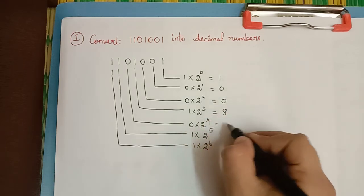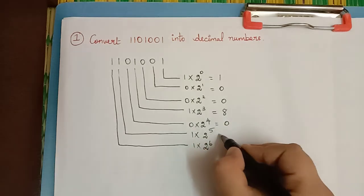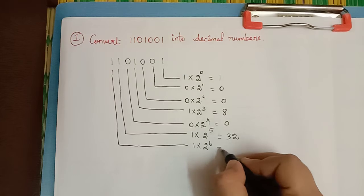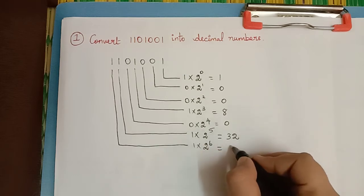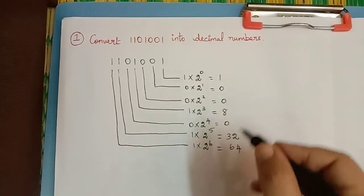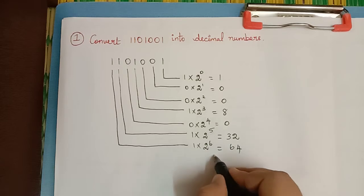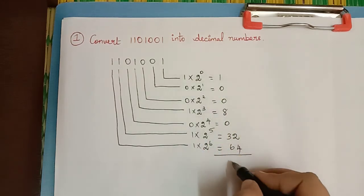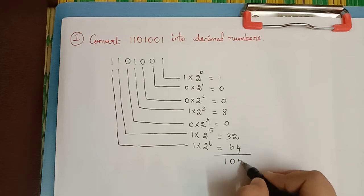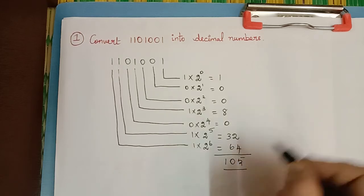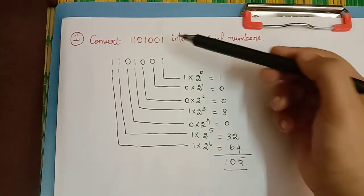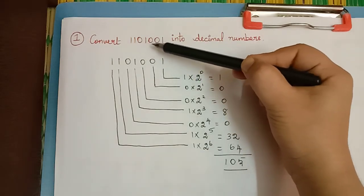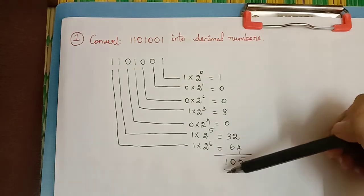The next digit is 0. Then 2 to the power 5 into 1 is 32. And 2 to the power 6 is 64, multiplied with 1 is 64. Now we have to take the total of these numbers. When we sum all these numbers we get 105. So the decimal number for the binary number 1101001 is 105.